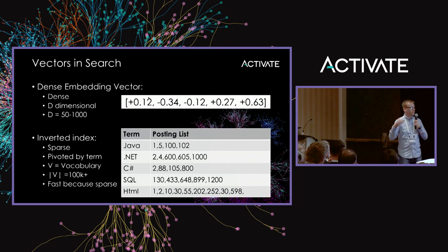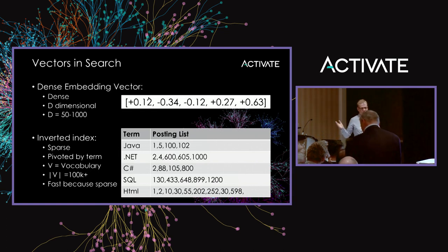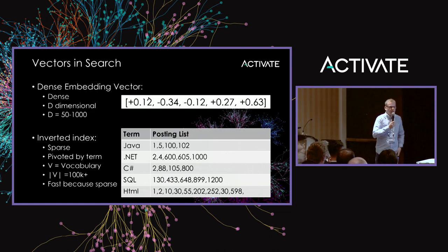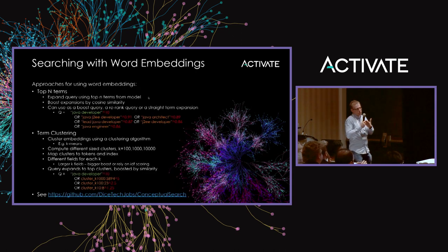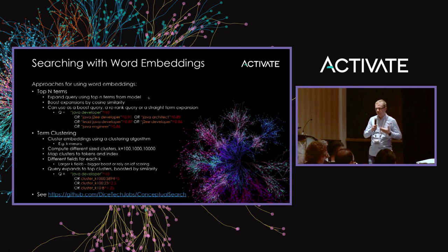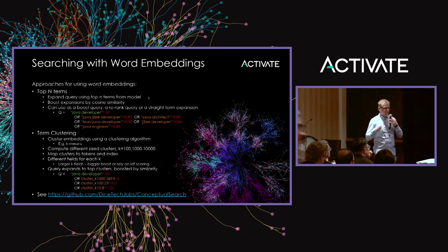If you have some terms that appear in almost every document that people search on, your search will be really slow — we've actually had that issue. The term 'Java,' for instance, appears in almost any tech resume, so searching Java causes problems, and we can't remove it as a stop word because people actually search on it. The key point is: inverted indexes work because of sparsity. So if you want to encode vectors in your search engine and scale them, you need a sparse representation. A dense representation, no matter how good, won't perform well.